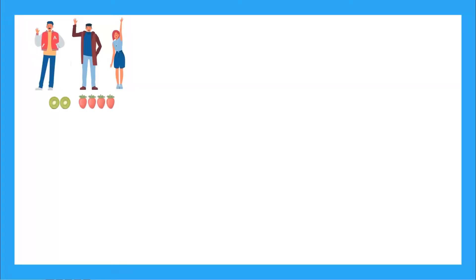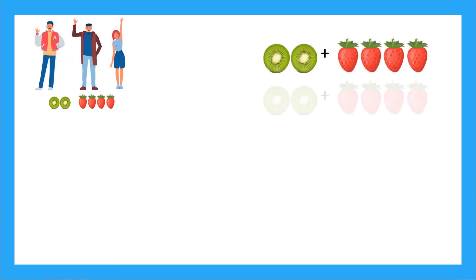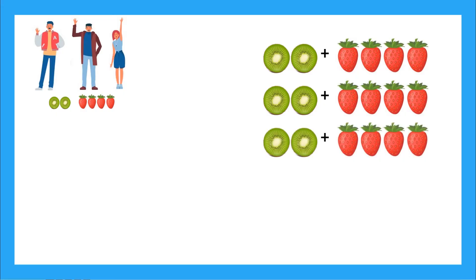Let's imagine that there are 3 friends all having lunch together, and each of them have 2 kiwis and 4 strawberries in their lunch. We want to know how many pieces of fruit the friends have in total. We know that each friend has 2 plus 4 pieces of fruit, and there are 3 of them. So we have 2 kiwis plus 4 strawberries, and we have this 3 times. Now let's look at just the kiwis — if we have 2 kiwis and I'm adding that to itself 3 times, that's the same as 3 times 2 kiwis.